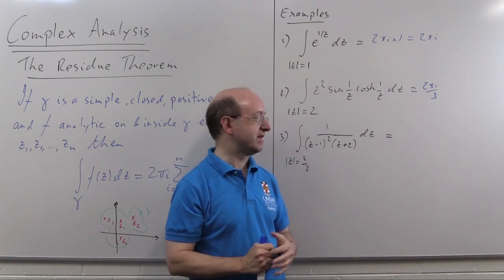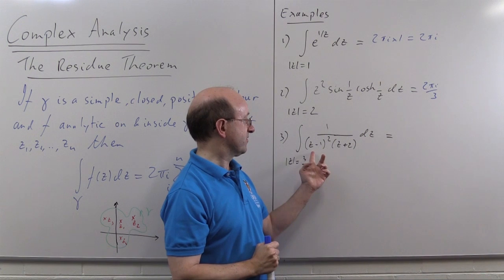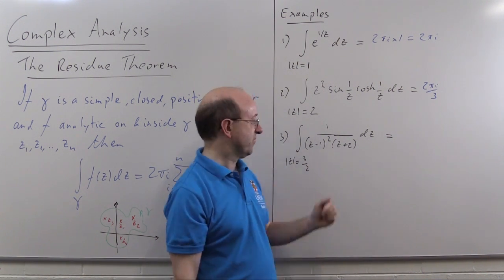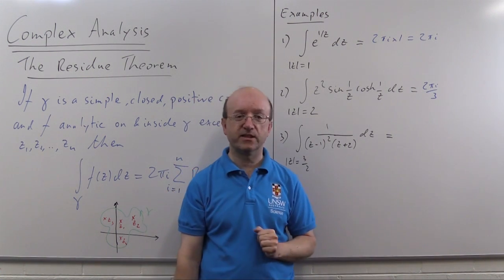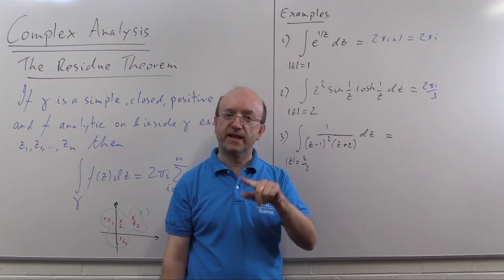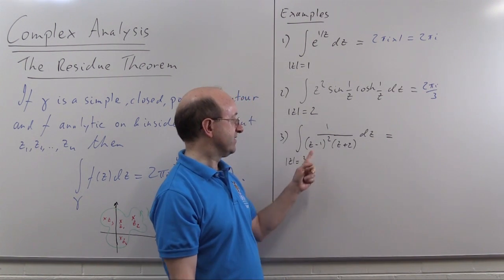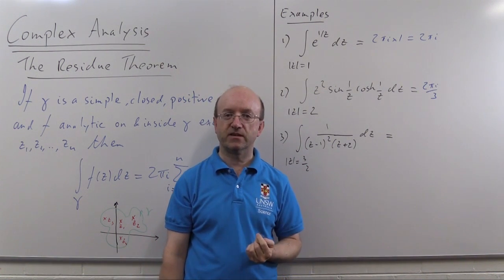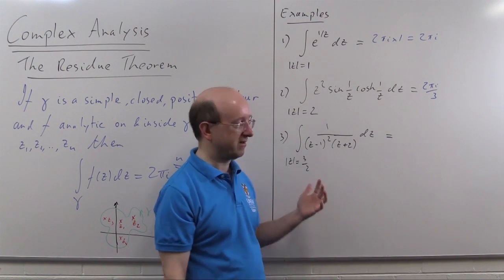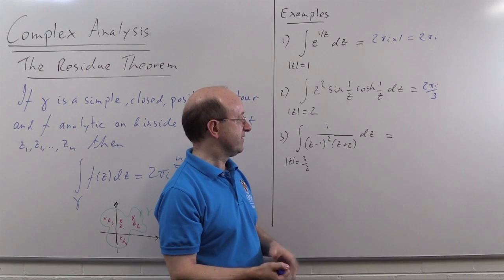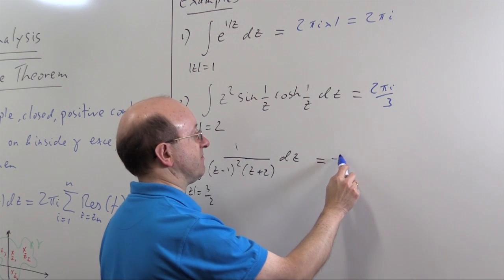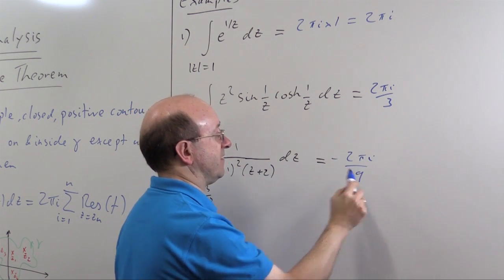In this third example here the situation is we've got a function that has got poles and in the video on residues at poles I calculated the residue at z = 1 and we've got minus a ninth and our contour here |z| = 3/2 contains the singularity at z = 1 but it doesn't contain the singularity at -2 so we don't care about the residue at -2 it happens to be a ninth if you calculate it but that's irrelevant all we care about is the fact that there's one singularity inside the residue there is minus a ninth so our answer here is -2πi/9.